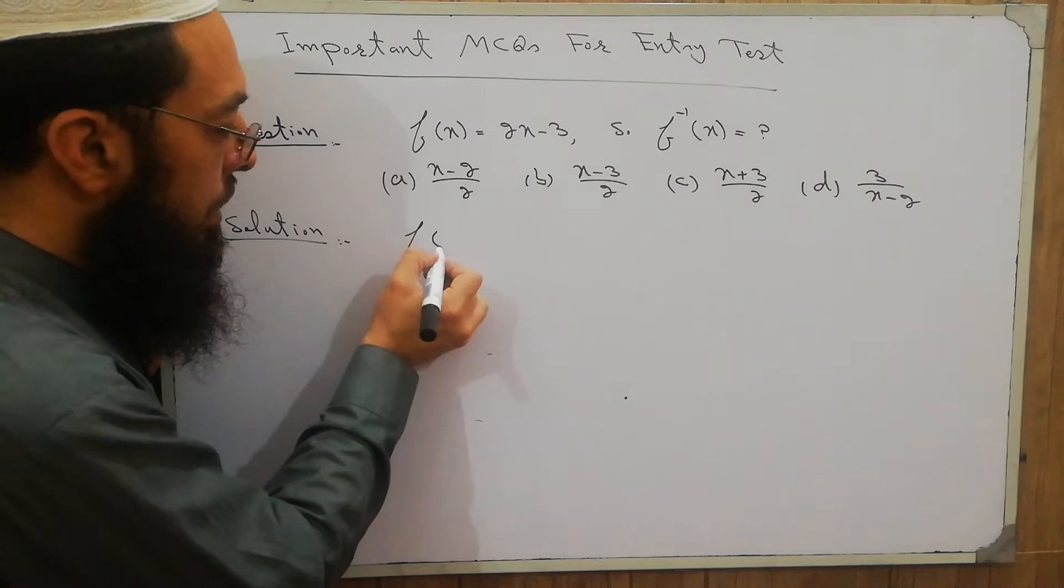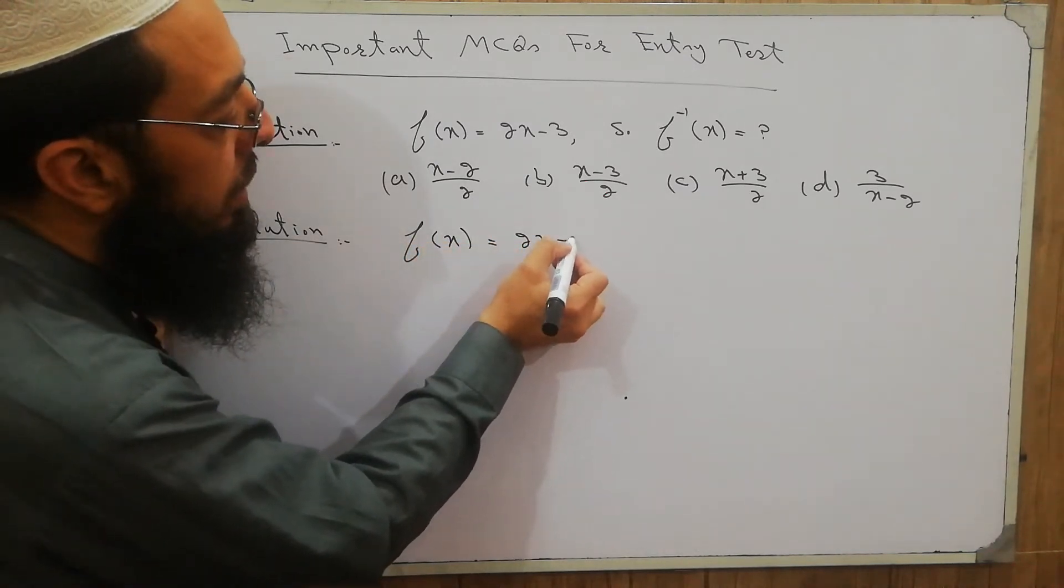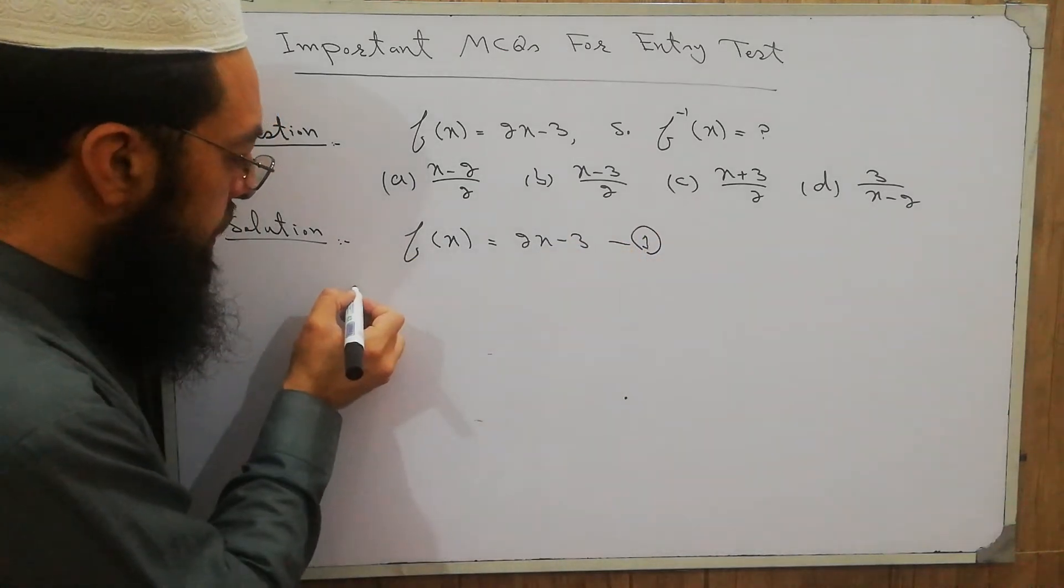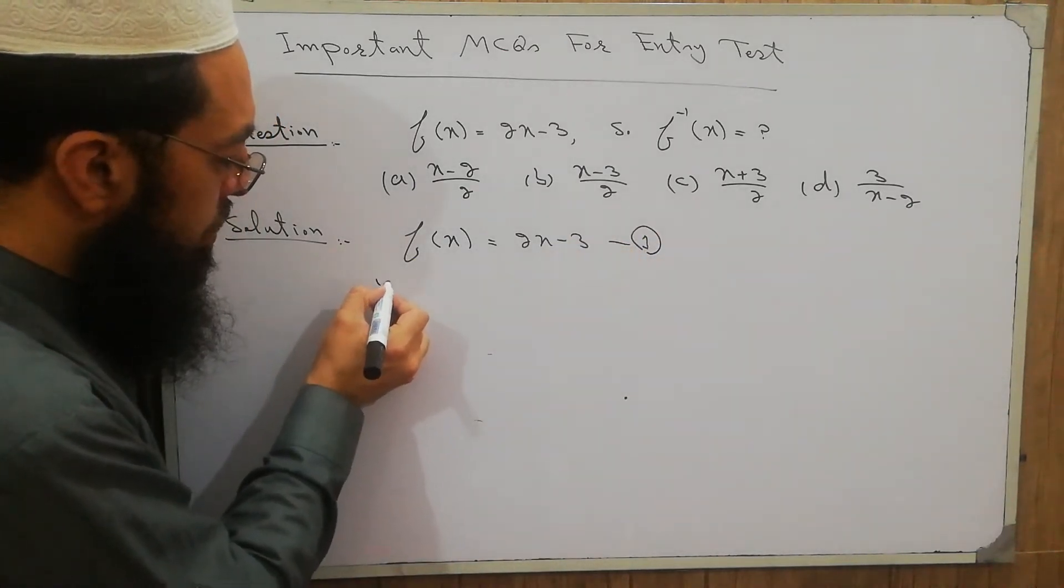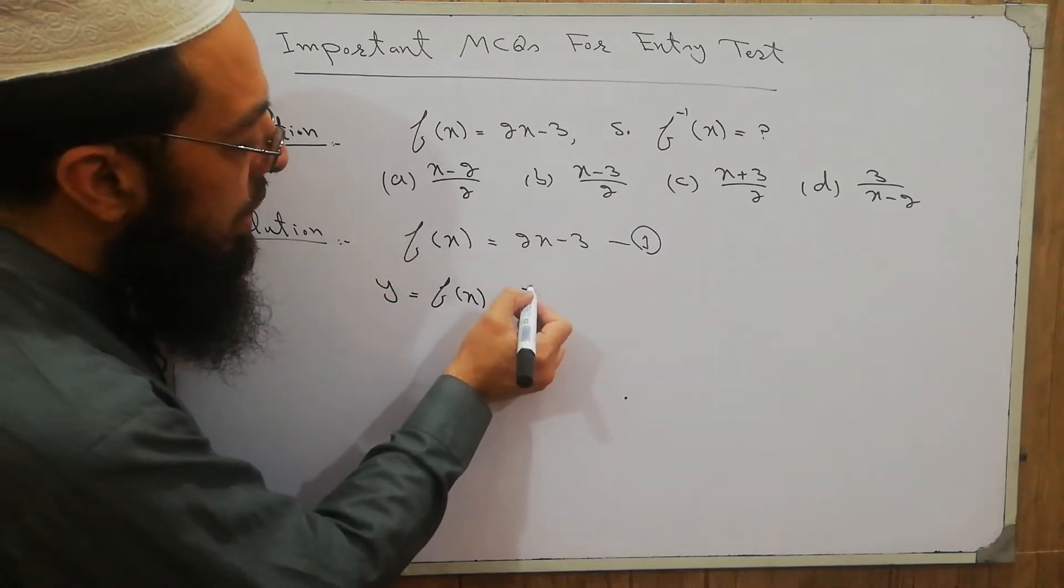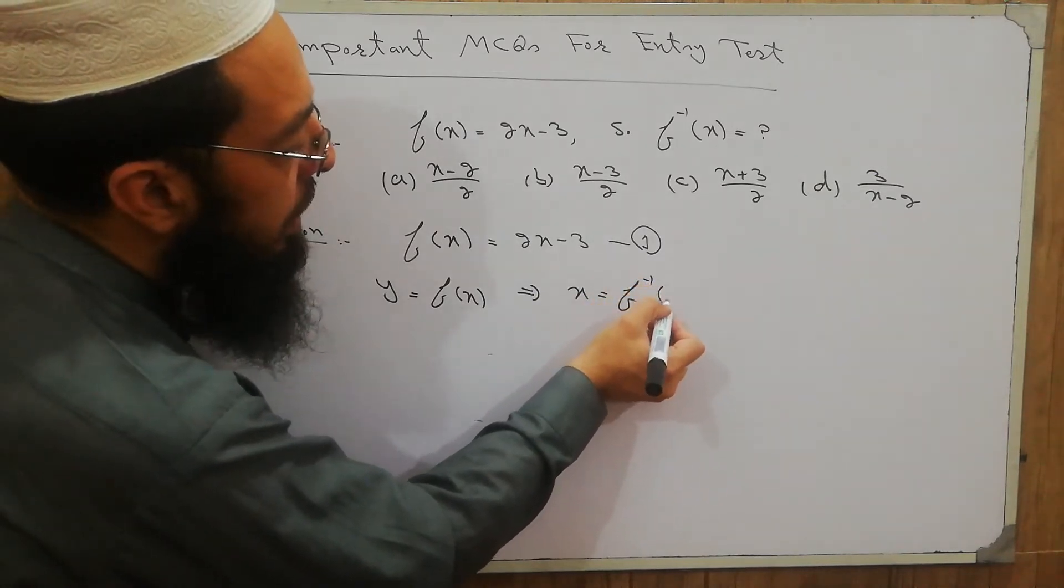So I start from f of x equals 2x minus 3. This is equation number 1. As we know that y equals f of x, or x equals f inverse of y.